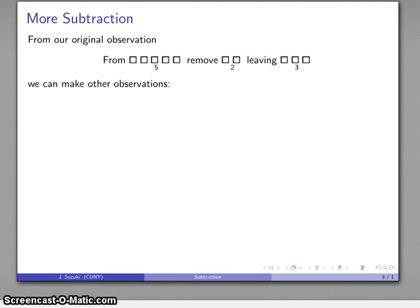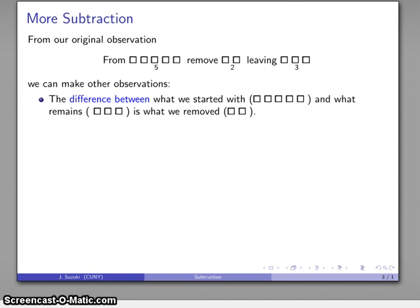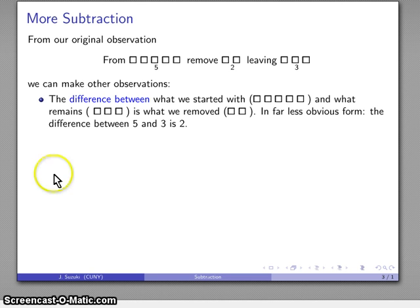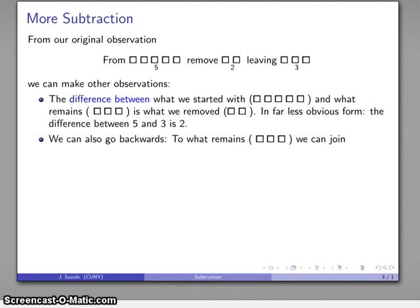First of all, we can talk about the difference between what we started with and what we end with, and the difference between what we start with and what we end with is what we removed. In a far less obvious form, the difference between five and three is two. Again, familiar but not easy. Here, this is easy: the difference between this and this is this.